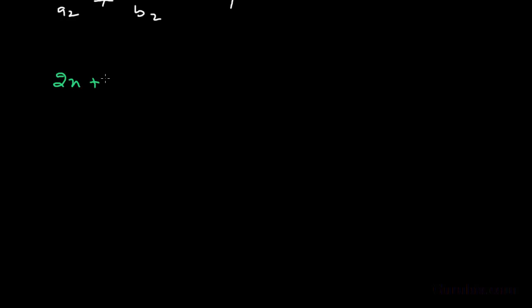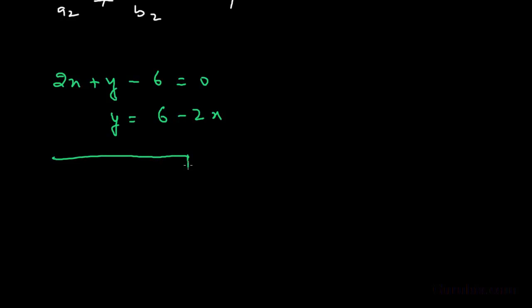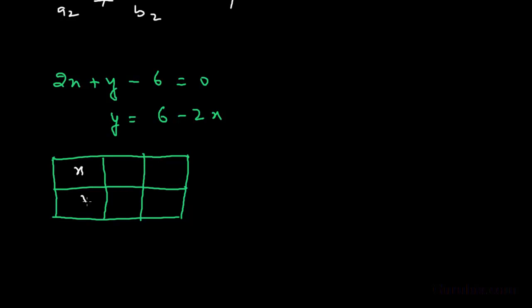For the graphical method, we take the first equation: 2x + y − 6 = 0. Writing y in terms of x gives y = 6 − 2x. We draw a table with two rows and three columns. If x = 2, then y = 2; if x = 3, then y = 0. We label these points A (2, 2) and B (3, 0).